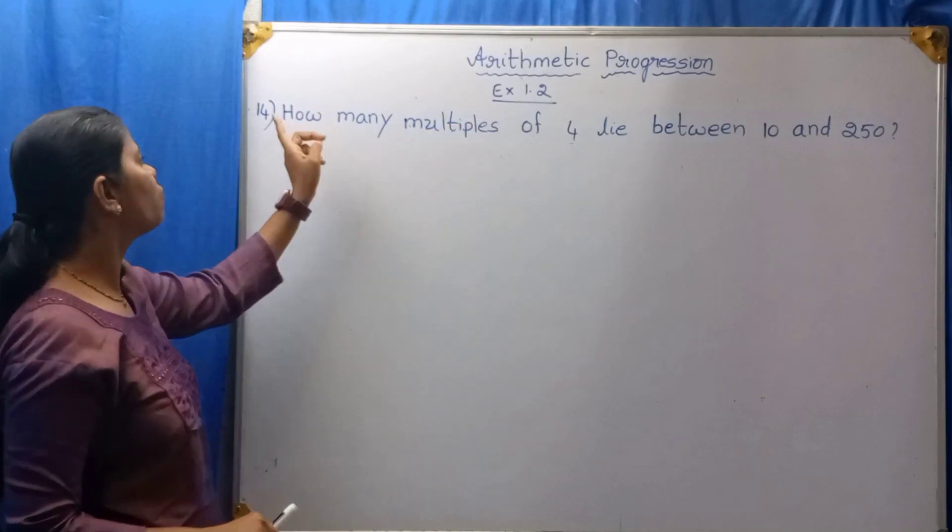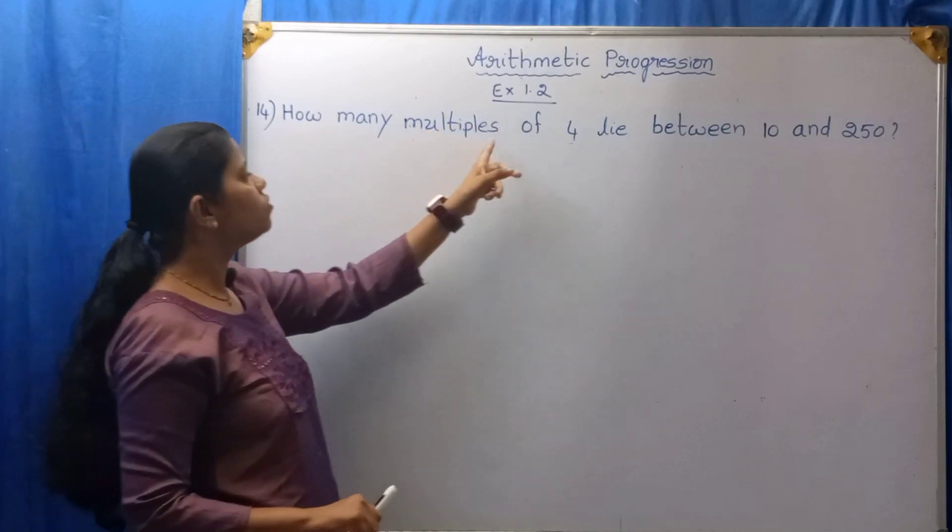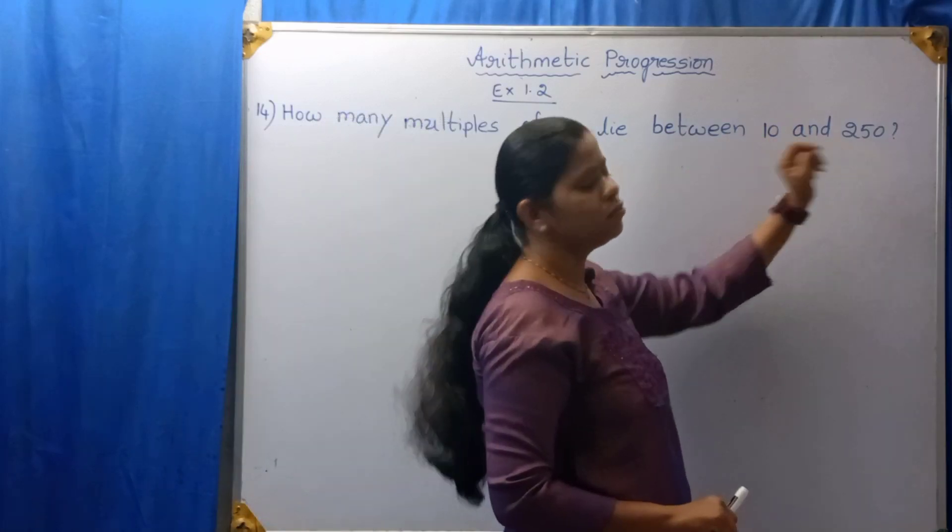Exercise 1.2, 14th question: How many multiples of 4 lie between 10 and 250?